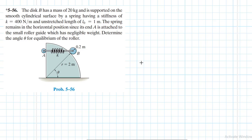The problem reads that the disc B has a mass of 20 kg and is supported on the smooth cylindrical surface by a spring having a stiffness of k equal to 400 newtons per meter and an unstretched length of L naught equal to 1 meter.